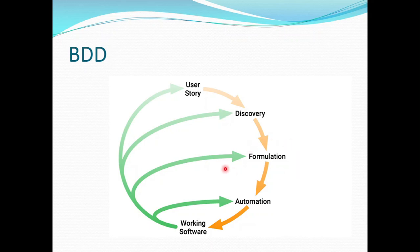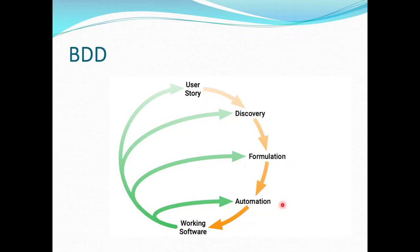Then it goes to the Formulation phase, where we document the examples discussed in the Discovery phase in a way they can be automated and also check for agreement. Then we have the last phase, which is Automation, where we implement the behavior described in these documents through the examples. This starts with automated tests to guide the development of code, and what we get is working software as the end product.